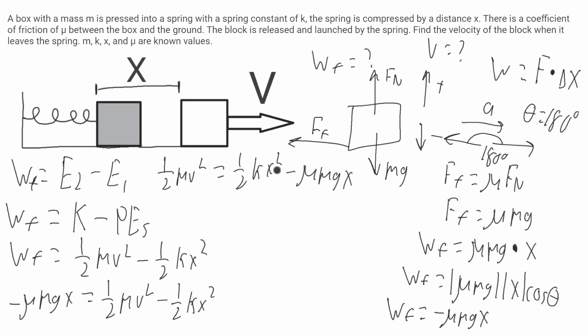I'm going to multiply the two to both sides and also divide by the mass. I'll get v squared is equal to kx squared over m minus 2 mu mg x over m. And that is your final answer.